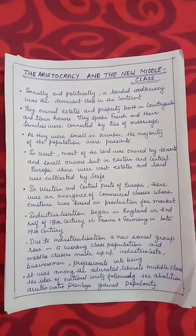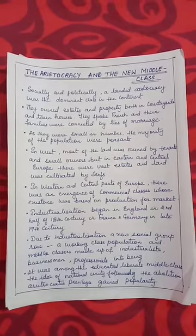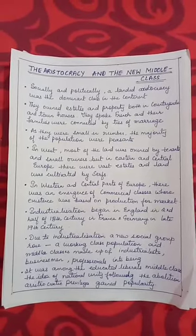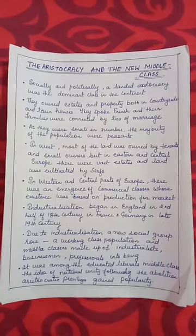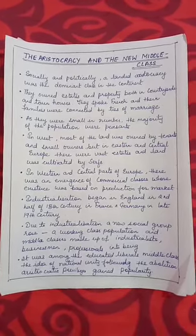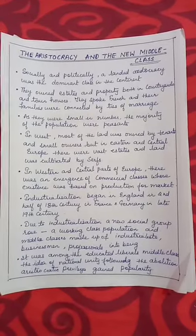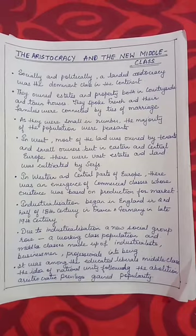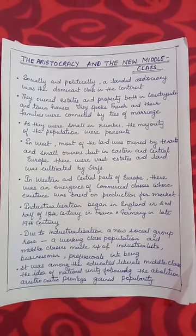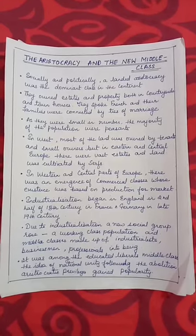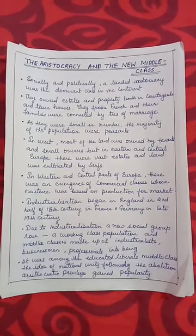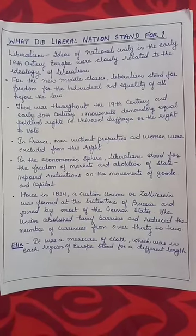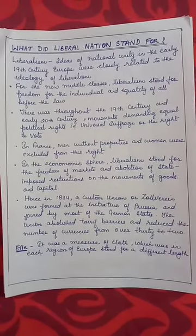In Western and Central Europe, there was an emergence of a commercial class whose existence was based on production for the market. Industrialization began in England in the second half of the 18th century, and in France and Germany in the late 19th century. Due to industrialization, a new social group arose — a working-class population — and a middle class made up of industrialists, businessmen, and professionals came into being. It was among the educated liberal middle class that the idea of national unity, following the abolition of aristocratic privileges, gained popularity.